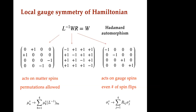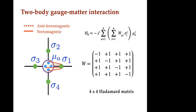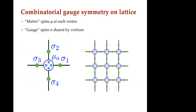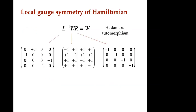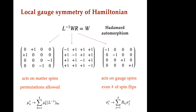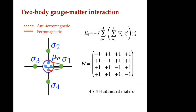I can permute the matter spins because they live inside the vertex — they don't mess up the lattice structure. The gauge spins I can only flip, not permute, because permuting them would mess up the lattice. But I can switch the states of the blue matter spins without messing up the lattice structure. That's the ingredient that allows you to use this combinatorial gauge symmetry to construct local invariants — by keeping W invariant you keep the Hamiltonian invariant, at the price of introducing four spins at each vertex.